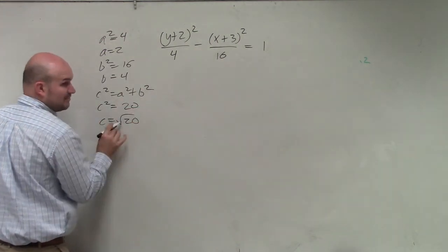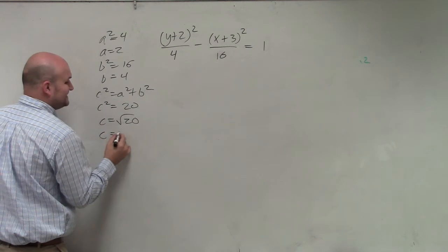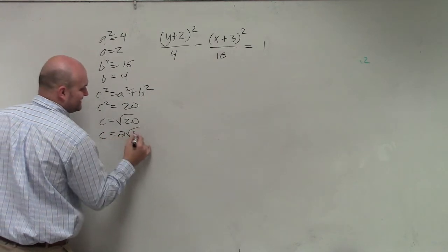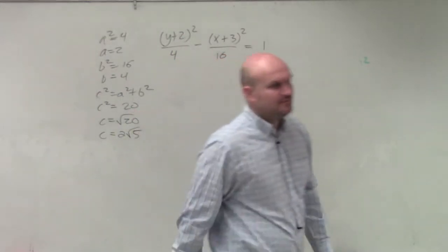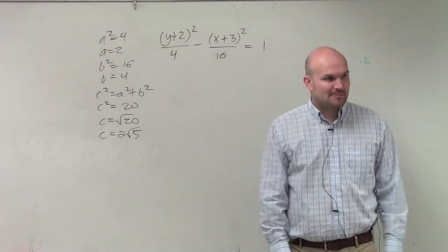c equals the square root of 20, which can be simplified to square root of 4 times 5. Square root of 4 would be 2 radical 5, right? That's how quickly we should be able to get to that point.